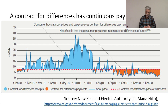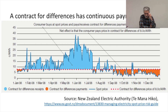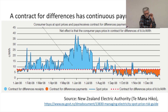The strike price was $0.08 New Zealand currency per kilowatt hour, and the firm agreed to pay $0.08 per kilowatt hour no matter what.